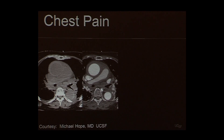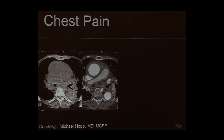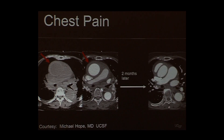Here are some examples, some provided by my colleague Michael Hope from our radiology group. In a patient presenting with chest pain, we see both pre-contrast and contrast acquisitions. The contrast image shows very clear delineation of the lumen, but looking at the pre-contrast image reveals increased intensity in the wall, indicating hemorrhage. This patient returned two months later and had developed a dissection at exactly the location where we had previously seen hemorrhage into the wall.